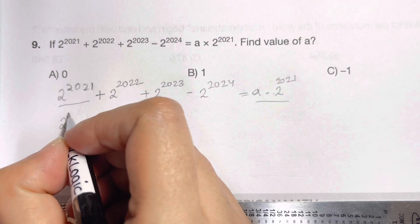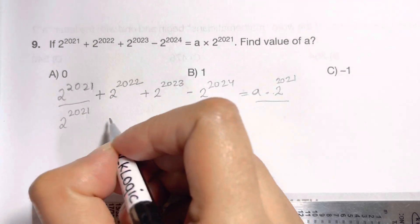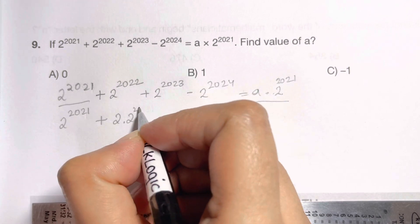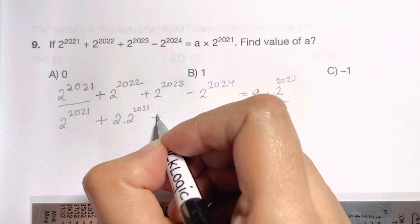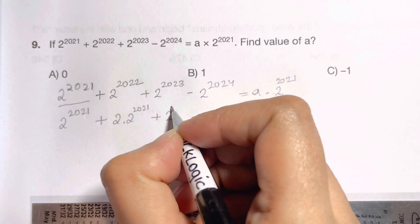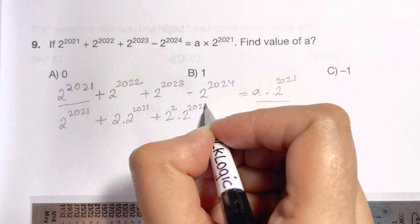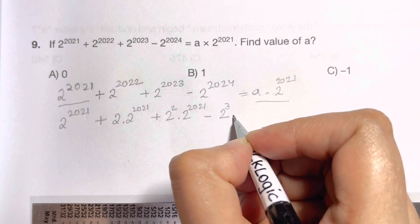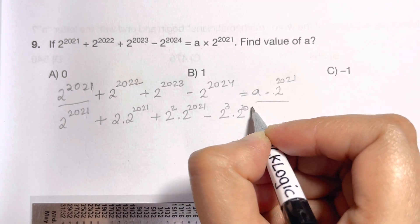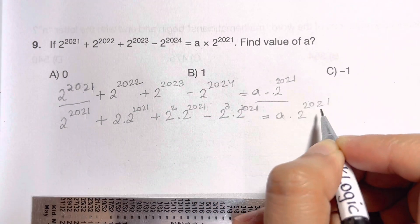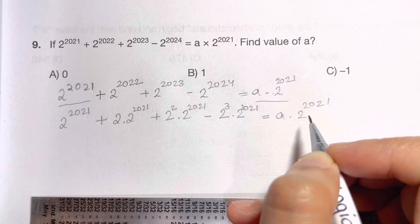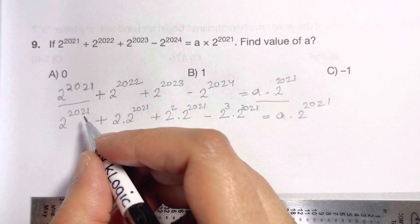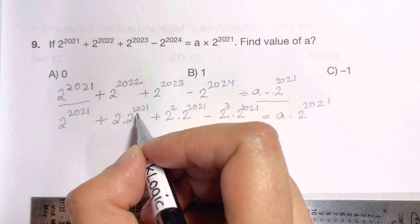So: 2 to the power of 2021, plus 2 times 2 to the power of 2021, plus 2 squared times 2 to the power of 2021, minus 2 cubed times 2 to the power of 2021, equals a times 2 to the power of 2021.